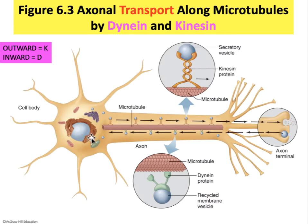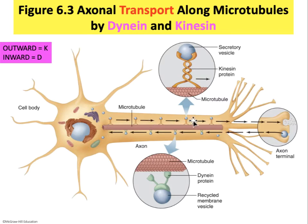Returning our attention to the neuron itself, we have to discuss how material generated by the organelles in the cell body is delivered — sometimes across huge distances — to the ends of the axons where it's needed. This could be neurotransmitter or waste products. The cytoskeleton is key in carrying this material. Microtubules form roadways along which motor proteins carry cargo. Kinesin proteins carry cargo away from the cell body, while dynein proteins carry cargo towards the cell body.